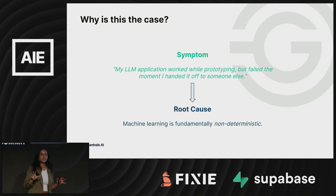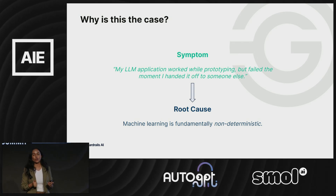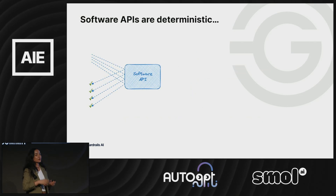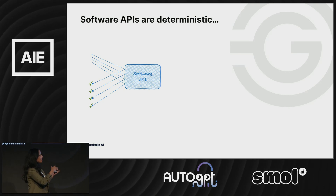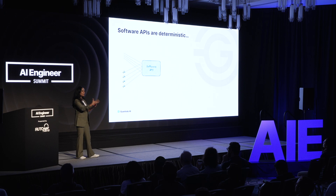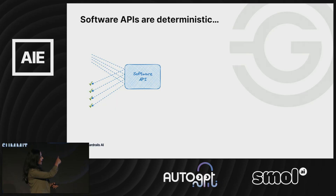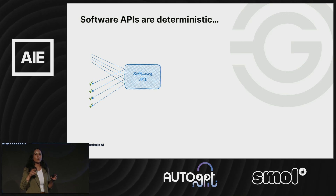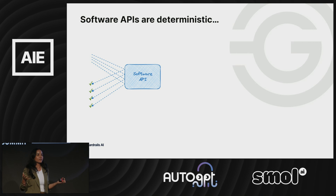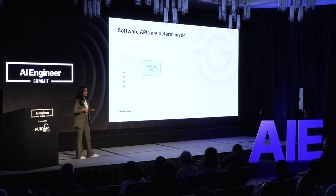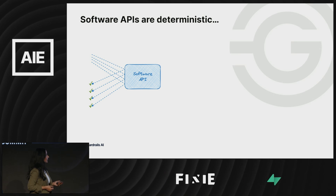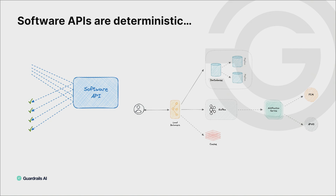The root cause of this symptom is that machine learning is fundamentally non-deterministic. If you think about a database and querying it to get a question about how much the spend of a user was over the last month, every single time you hit that database API you are going to get the correct response — representative of whatever your true data actually is, completely irrespective of uptime and availability. This fundamental property allows you to build really complex software systems that power our world today.